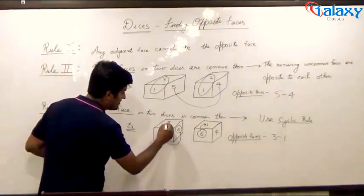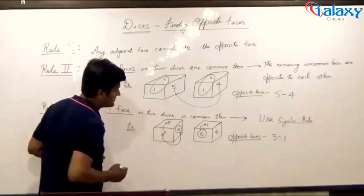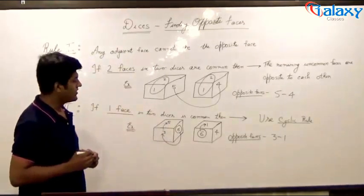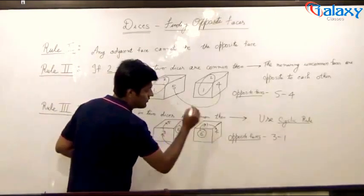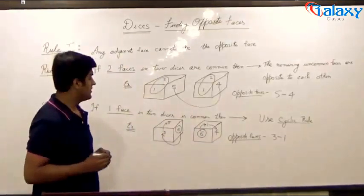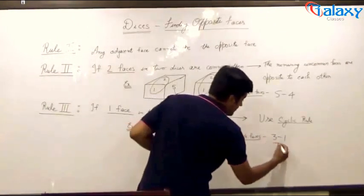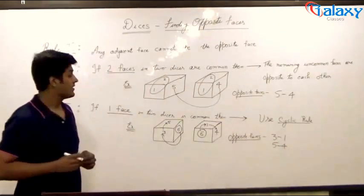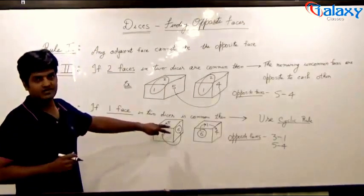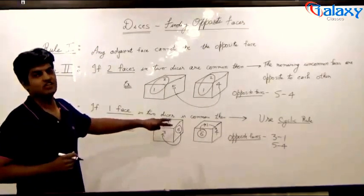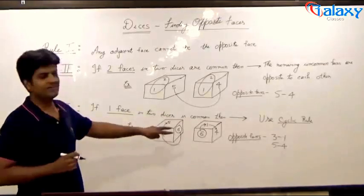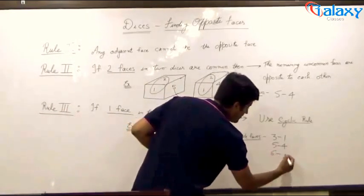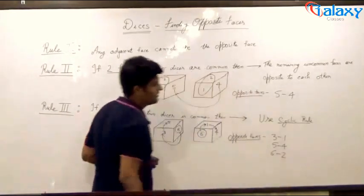Now, we will move ahead in the same direction, that is clockwise direction. Here we encounter five in the first dice. However, in the second dice, we encounter four. Hence, the face having four is opposite to the face having five. And the face which is common, that is six, is opposite to the face which is invisible — that is, which is not displayed in either of the two dices. Hence, six must be opposite to the face having number two.